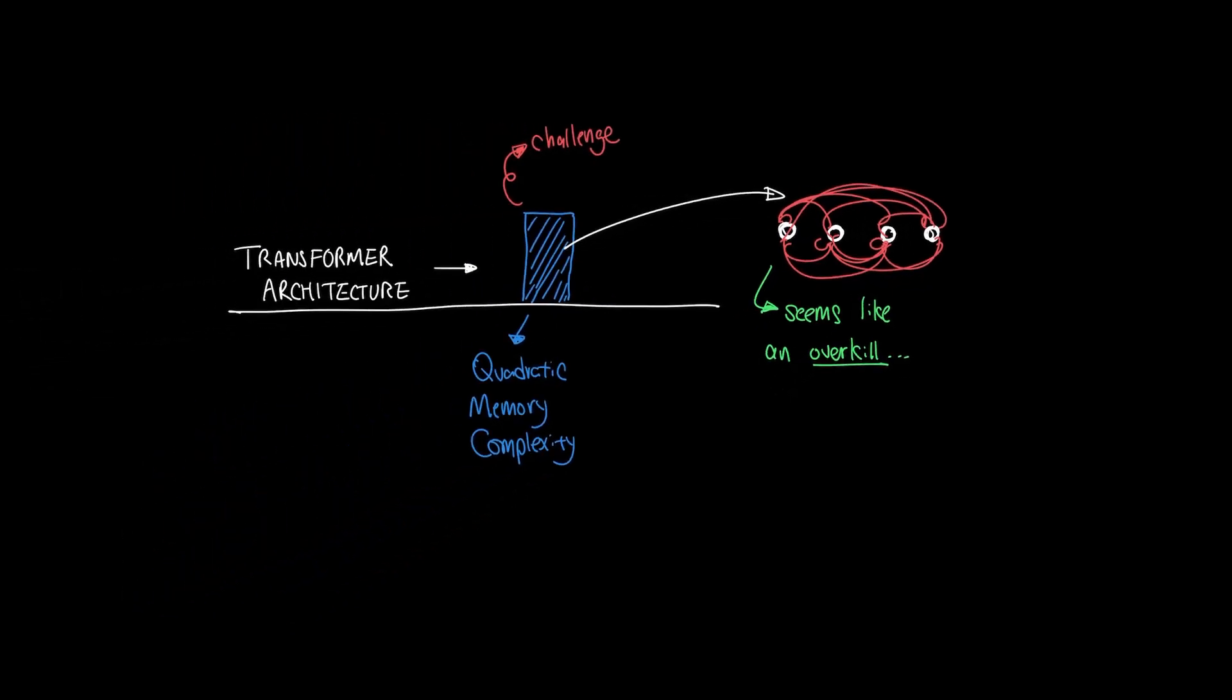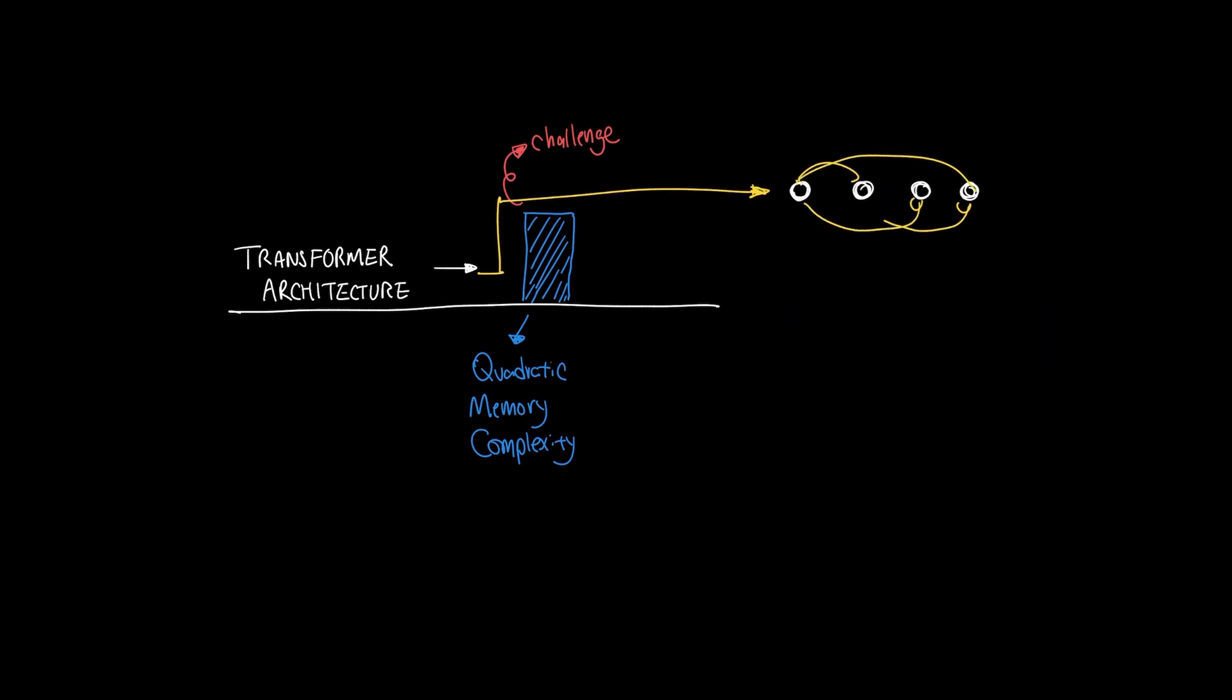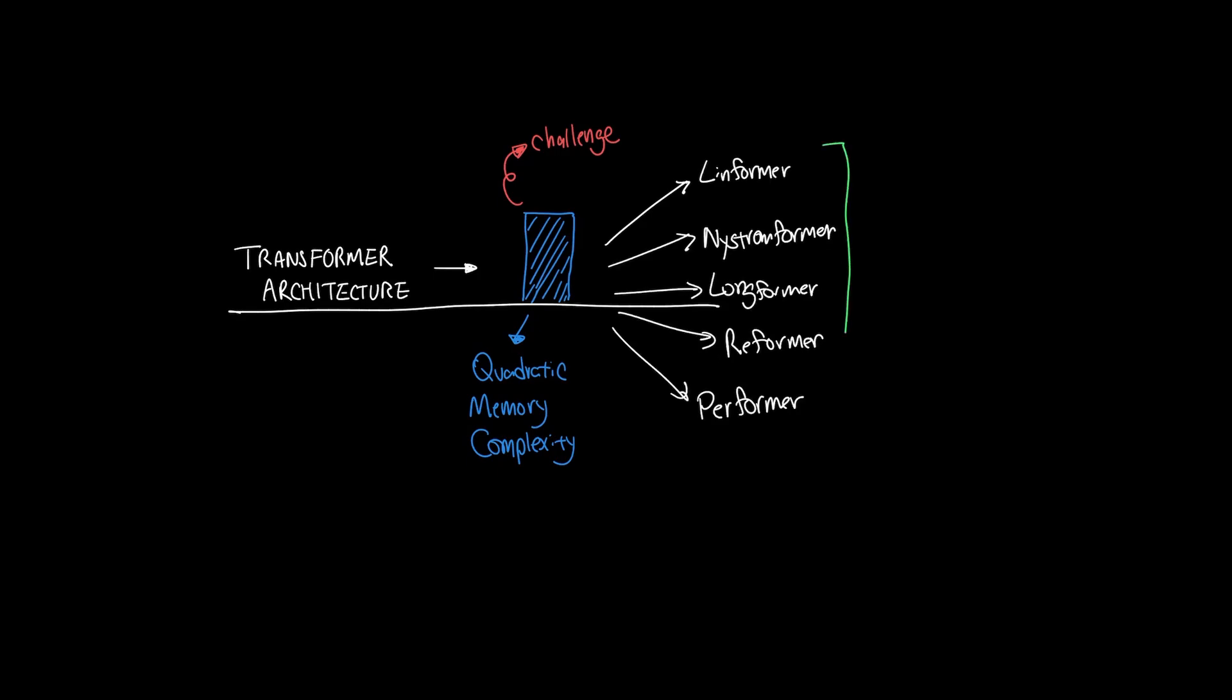The architecture of Transformers did mature over time to get around the limitations of quadratic memory complexity by reducing the burden of pairing all tokens. For example, there's been some interesting techniques such as being more selective by grouping the inputs in different parts or just approximating pairs that have fewer dimensions. So different variants of Transformers were brought forward, but they remain somewhat unpopular still because of the quality trade-off as a side effect.